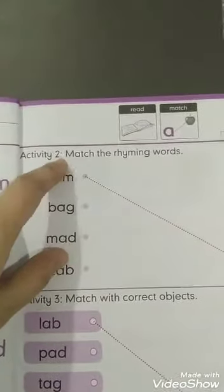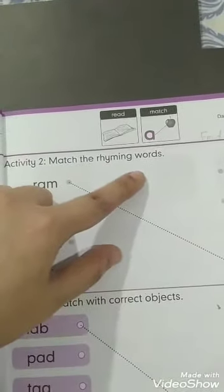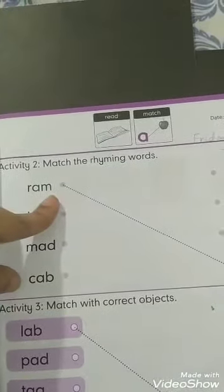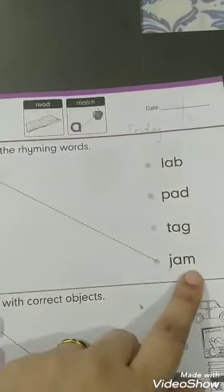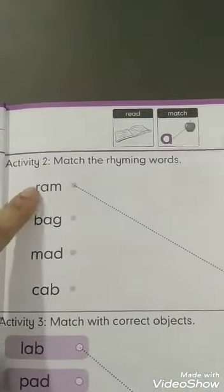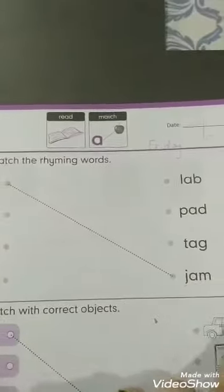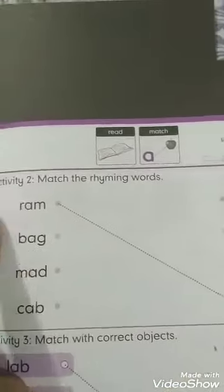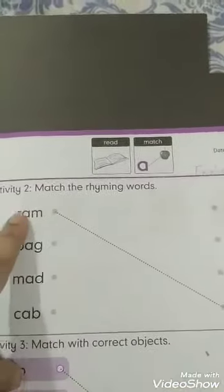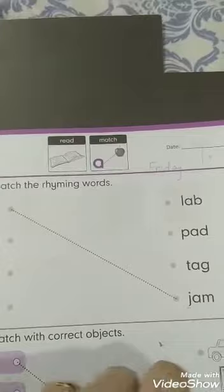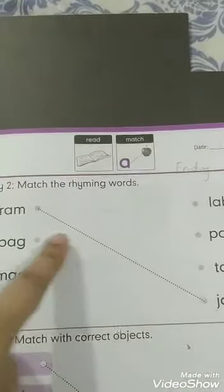Then we will read the statement - Activity 2: Match the rhyming words. What is meant by rhyming words? Rhyming words are the words that have same ending sound. Like R-M Ram, J-M Jam. Is mein first letter jo hai woh change hai or last ki two letters jo hai woh same hai. Yaha pe unhone dots ke saath humne example di hui hai.